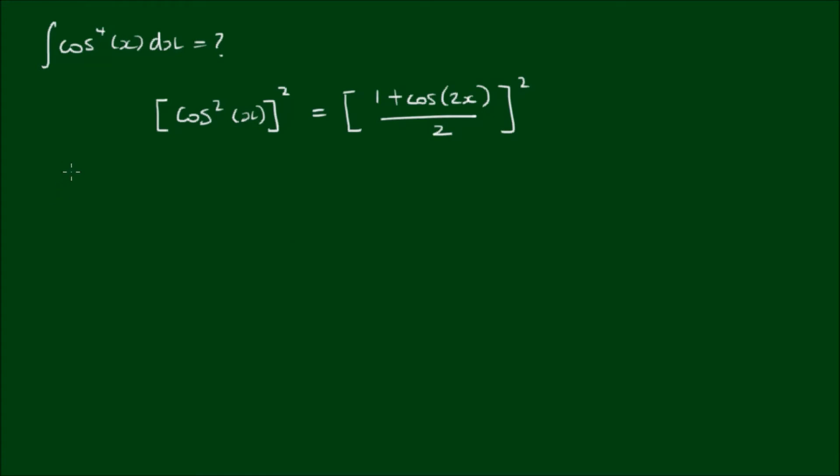And a few videos ago, we did derive the reduction formula for powers, or for integrating powers of cosine, which is 1 divided by n by cosine to the n minus 1 power, n can be any integer power, by sine of x plus n minus 1 divided by n by the integral of cosine to the n minus 2 power of x with respect to x.